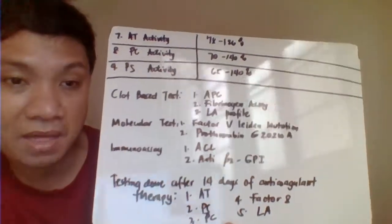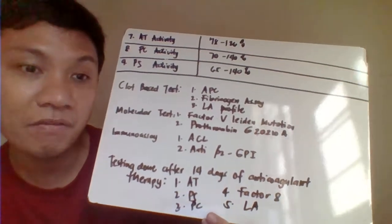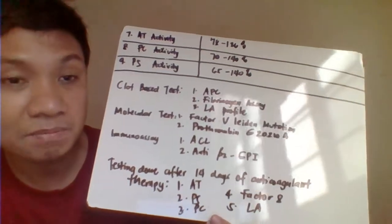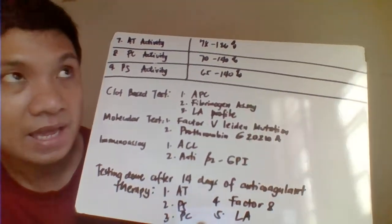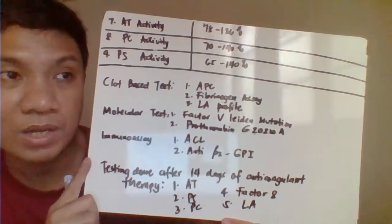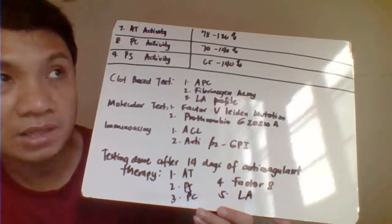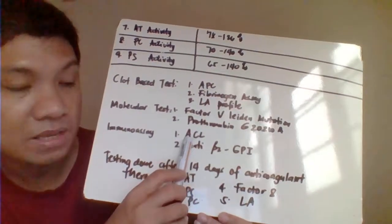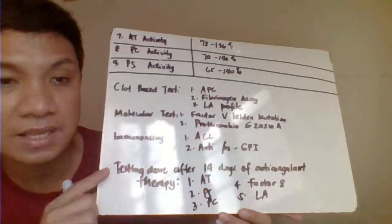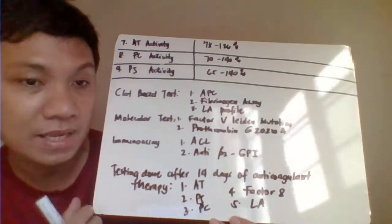Tests can be classified by method: clot-based (measuring clotting time) — includes APC/APTT, fibrinogen assay, and lupus anticoagulant profile. Molecular tests are used for Factor V Leiden mutation and Prothrombin G20210A. Immunoassay is used for anti-cardiolipin antibody and anti-β2GPI antibody, since these are antibodies detected using antigen-based reagents.